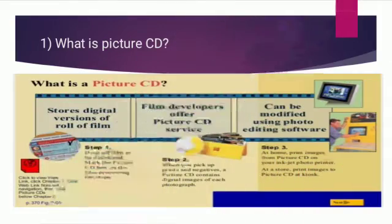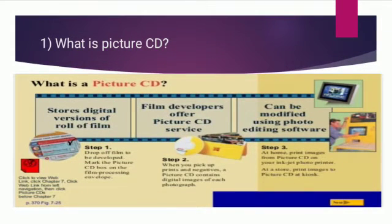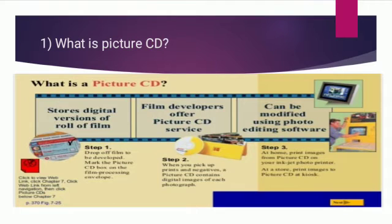A Picture CD stores a digital variant of the role of films. Film developers offer Picture CD service; the images can be modified using photo editing software. You drop the film off to be developed and mark the Picture CD box on the film processing envelope, then pick up prints, negatives, and a Picture CD containing digital images of each photograph. At home, you can print images from the Picture CD on an inkjet photo printer.